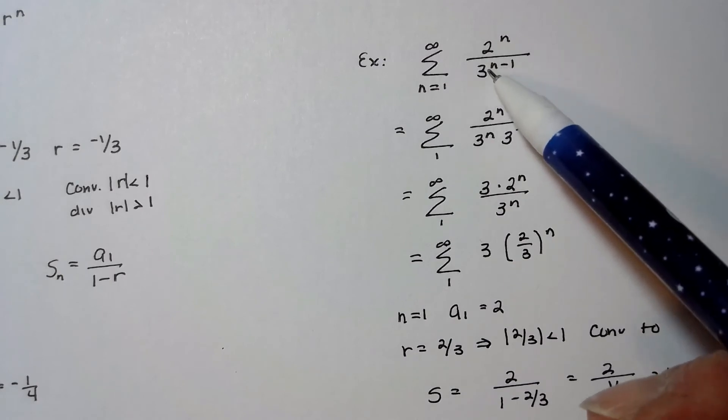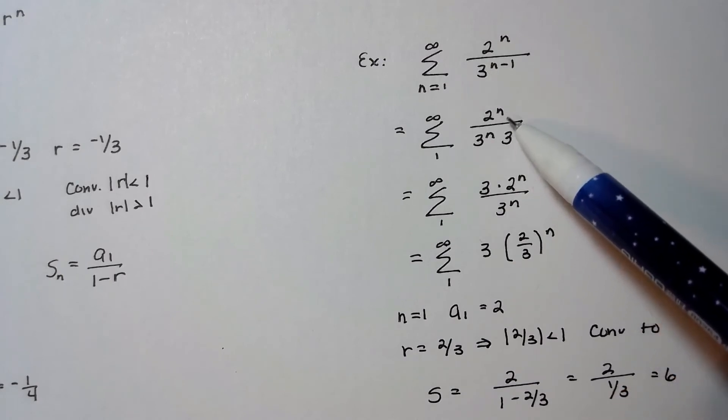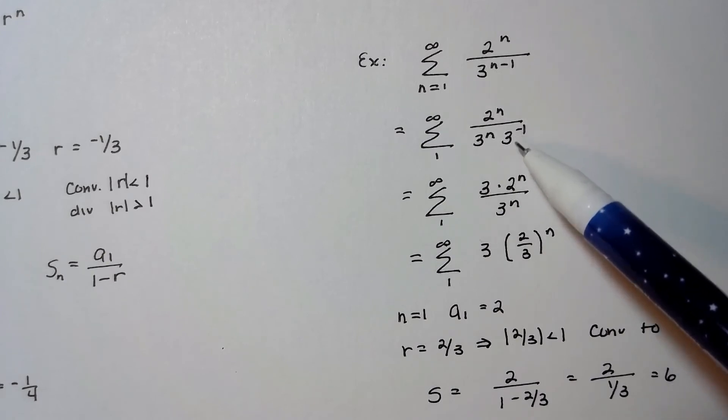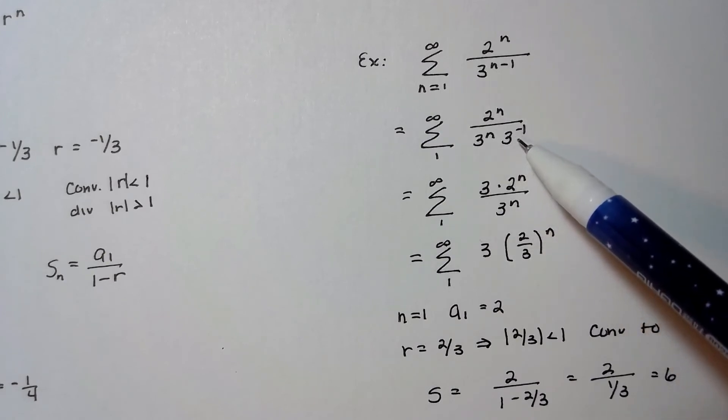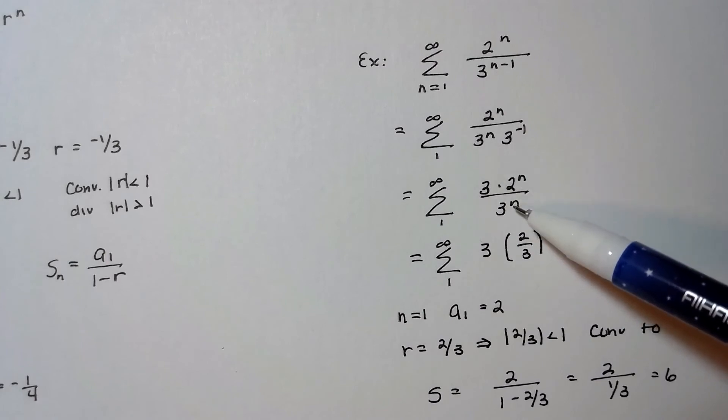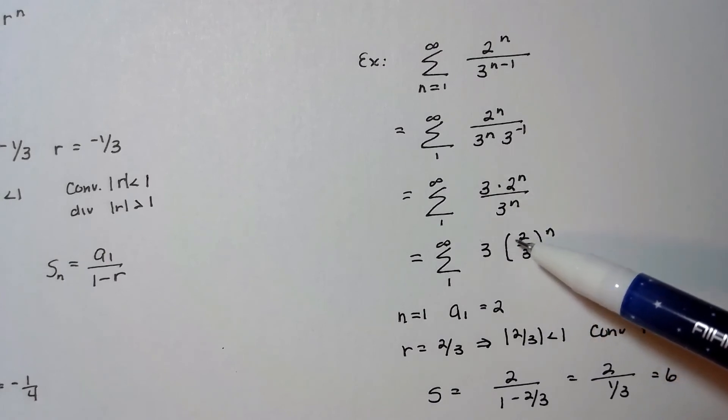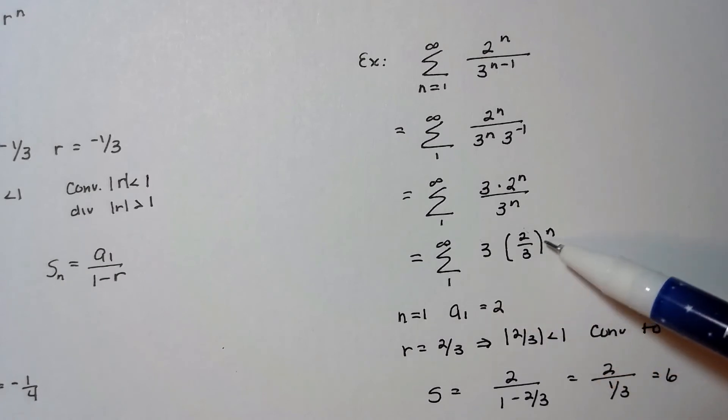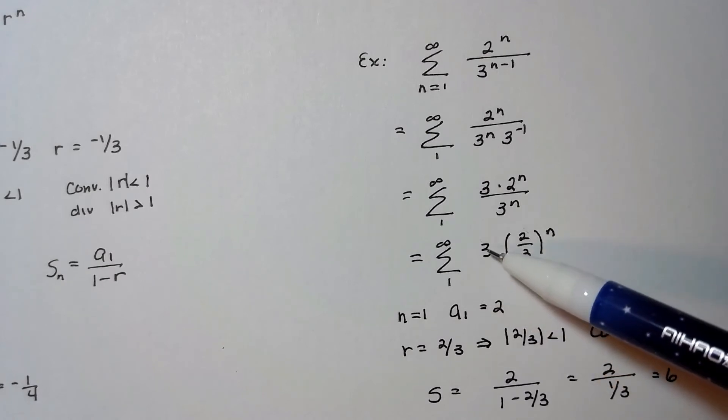So by rules of exponents, I want to kind of separate this, right, and write this as 3 to the n times 3 to the negative 1. And you know, to make this exponent positive, I bring it upstairs into the numerator, so I have 3 times 2 to the n over 3 to the n, which is 3 times 2/3 to the n. So this is geometric, right? r is 2/3, which is less than 1, so I know that that's going to converge. And if I plug the 1 in for n, then the 3s are going to cancel and I'm going to end up with a first term of 2.